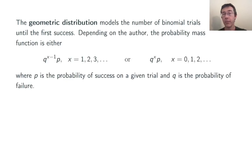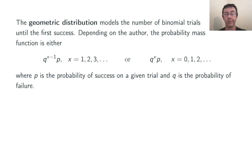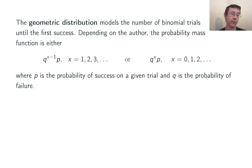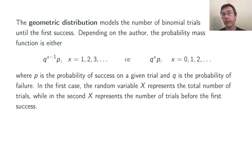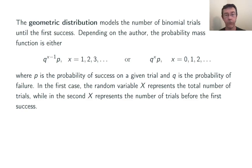Depending on the source, the probability mass function is either q to the x minus 1 times p, or q to the x times p. In the first case, x can be 1, 2, 3, and so on. In the second case, x can also be 0. Here, p is the probability of success on an individual trial, and q is the probability of failure. In the first case, x represents the total number of trials including that success, and in the second, x is just counting the total number of failures before that first success.